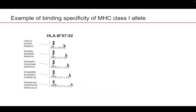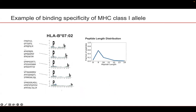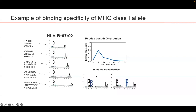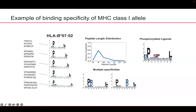Here is an example of the binding specificity of an MHC class 1 allele. We provide a binding motif for each peptide length separately. As we can see, there is a high similarity in the binding anchors between different lengths. We also provide the peptide length distribution of the allele, and we can see there is a high preference for peptides of length 9. Also, when available, we provide different binding modes of the allele — for example, arginine can only be in position 3 or 6 but not both positions at the same time. Finally, the motif of the phosphorylated ligand, when available, is presented in purple.